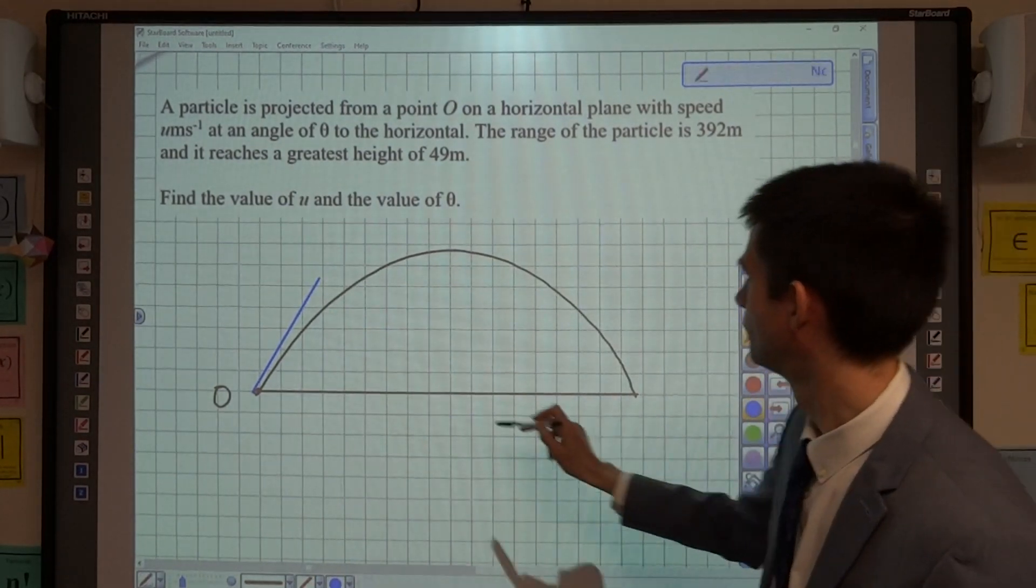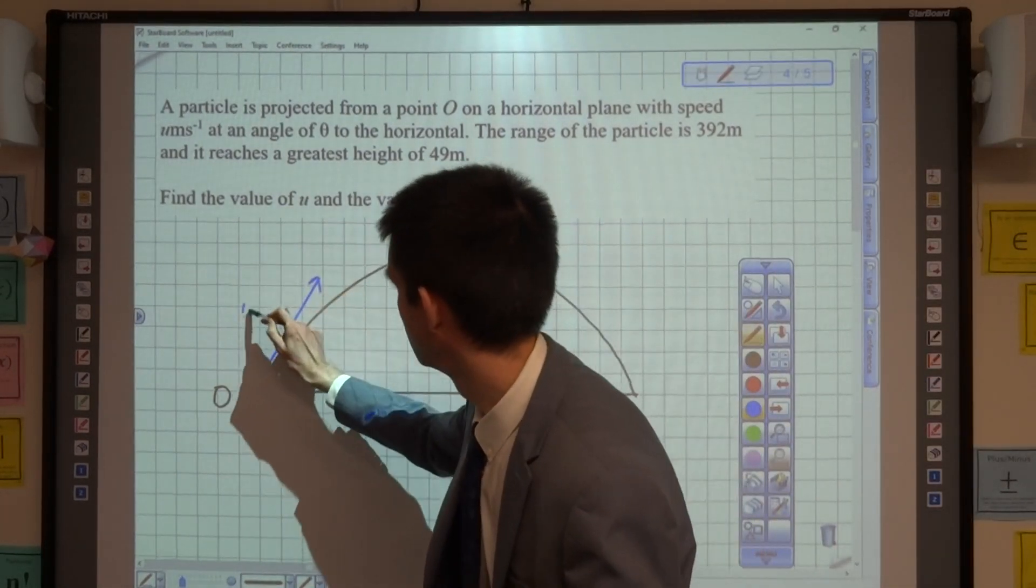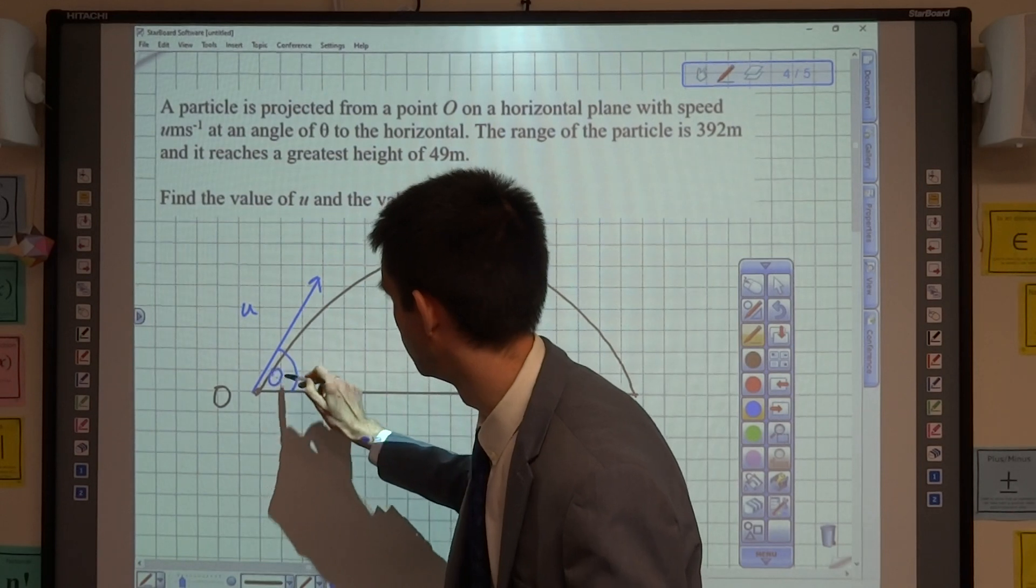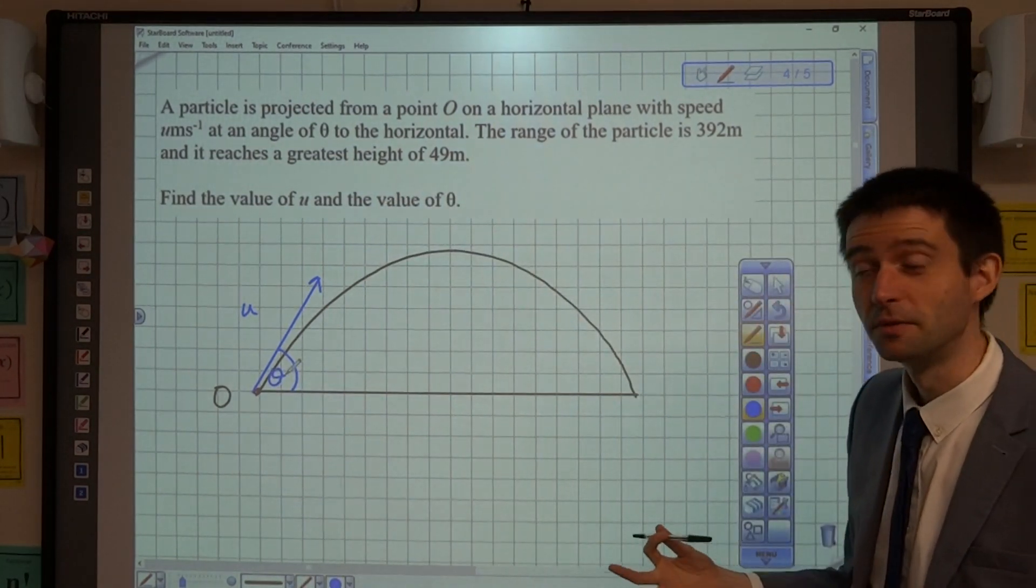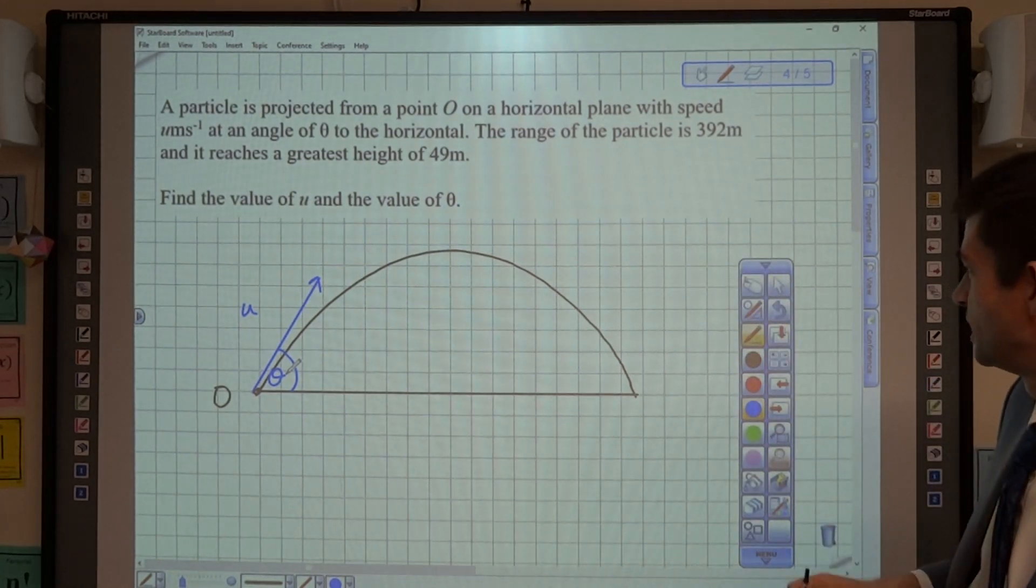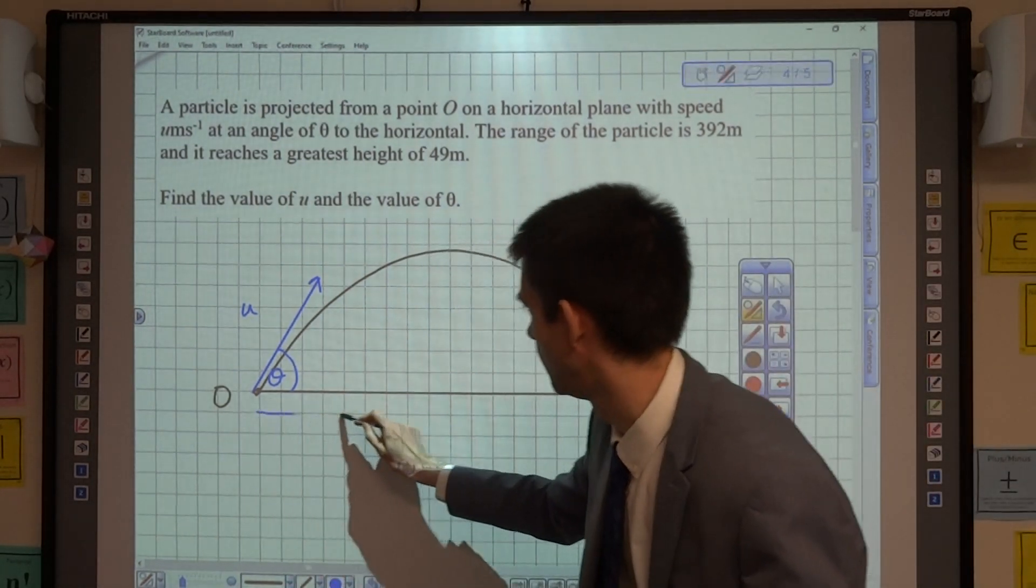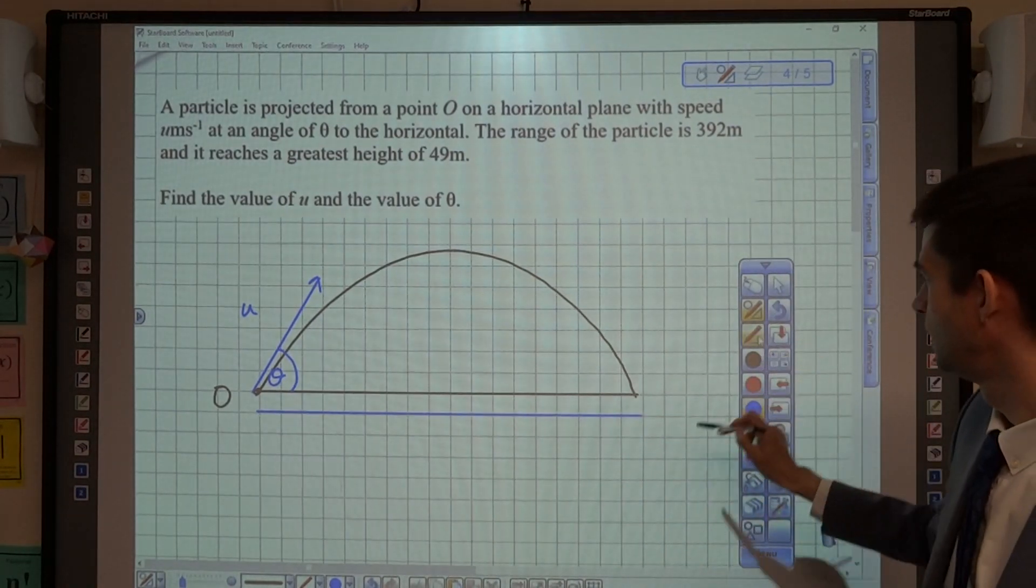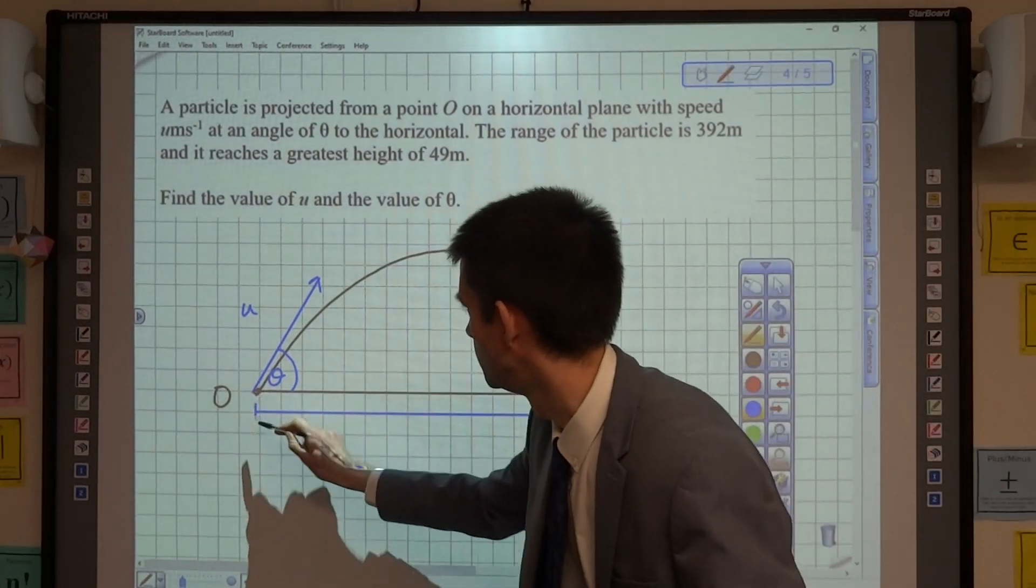And we know that we have an initial speed of projection of u, which I'll just draw in there. And we know that the angle of projection is theta. We don't know either of those two things. We know that the range of the particle is 392, so this distance here along the base is 392 metres.